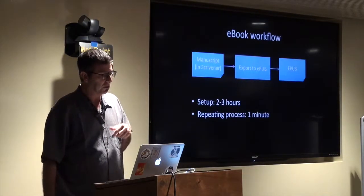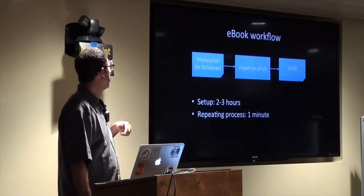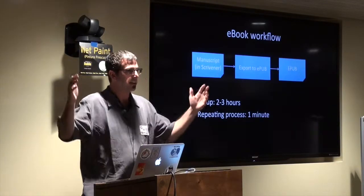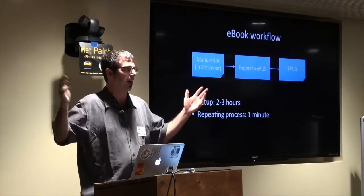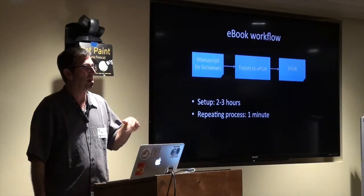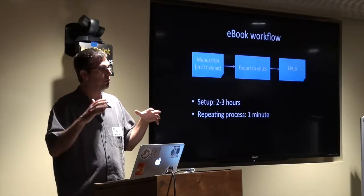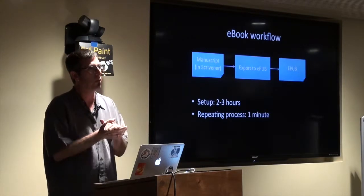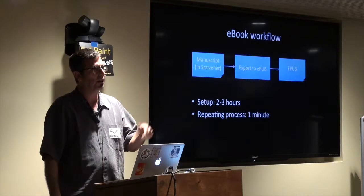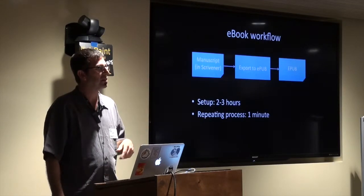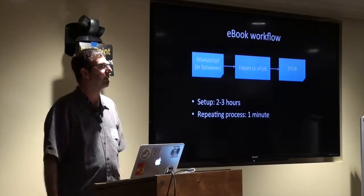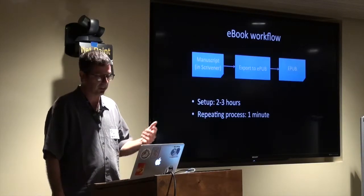So the e-book workflow looks like this. I have a writing tool called Scrivener, and I basically say 'export to EPUB,' and boom, I have an EPUB ready to publish. The first time I set that up it might take like an hour to get everything exactly the way I want, but any time I want to repeat that process — if someone says you've got a bug in chapter three — I can fix it and re-release the e-book in a matter of minutes.